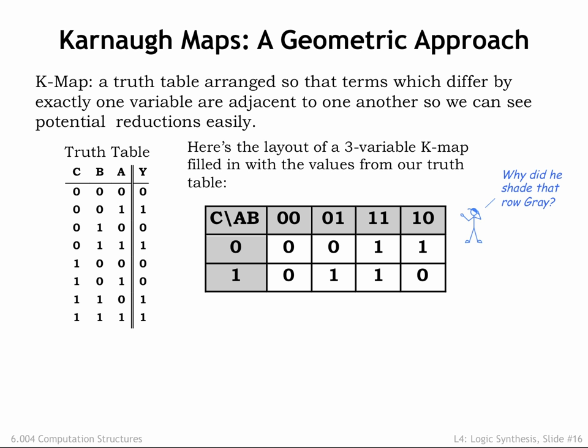Finding these opportunities would be easier if we reorganized the truth table so that the appropriate product terms were on adjacent rows. That's what we've done in the Karnaugh map, K-map for short, shown on the right.